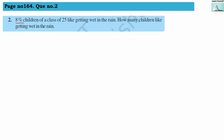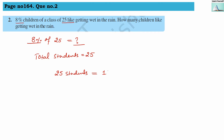Question number 2: 8 percent of the children in a class of 25 like getting wet in rain. How many children like getting wet in rain? We have to find 8% of 25. Using the unitary method: total students are 25, which is 100%. We need 8% of that. So 25 multiplied by 8 divided by 100. Since 25 fours are 100, and 4 eights are 2, the answer is 2 children got wet in rain.